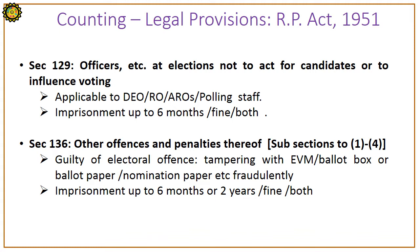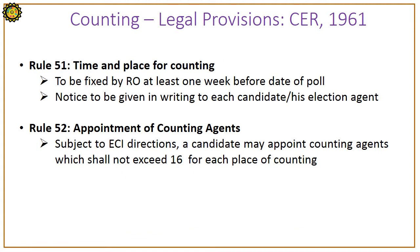Section 136 is about other offences and penalties. If a government official or any person is guilty of an electoral offence such as tampering with EVM, ballot box, ballot paper, nomination paper, etc. fraudulently, then imprisonment up to 6 months applies for any other person and imprisonment up to 2 years for government officials, or fine, or both.